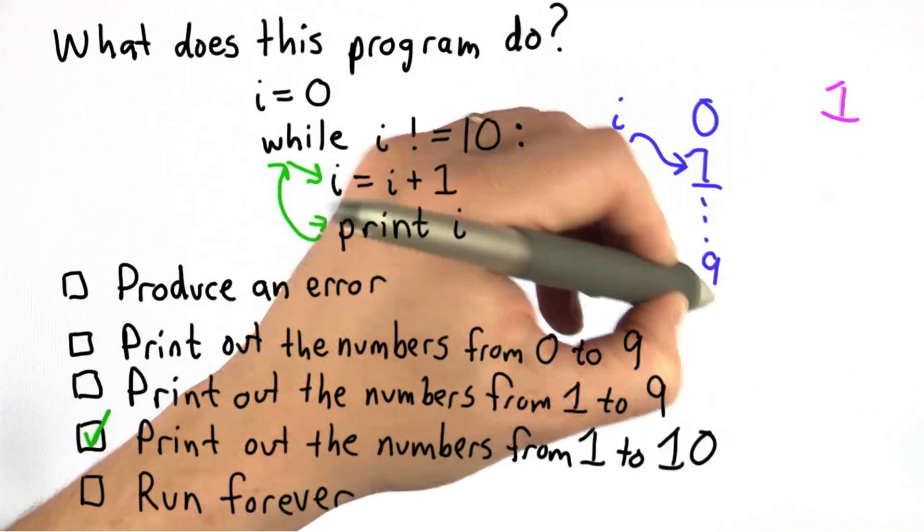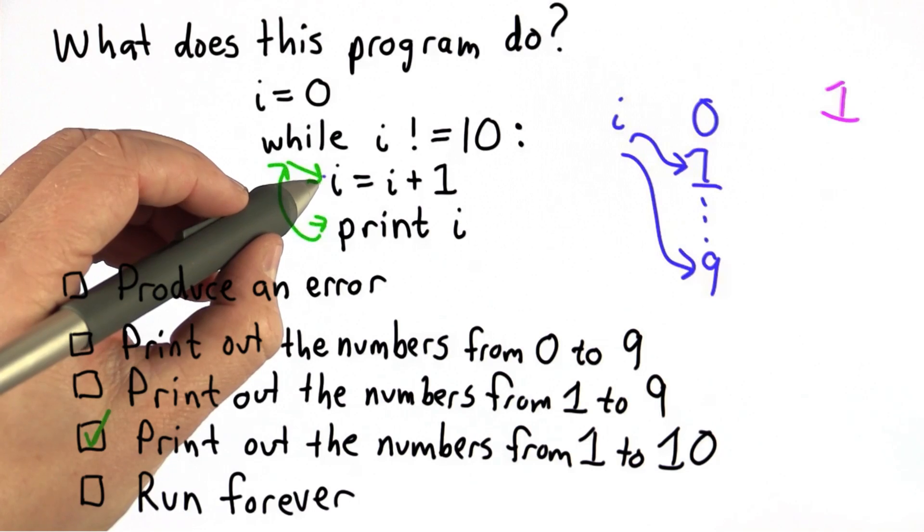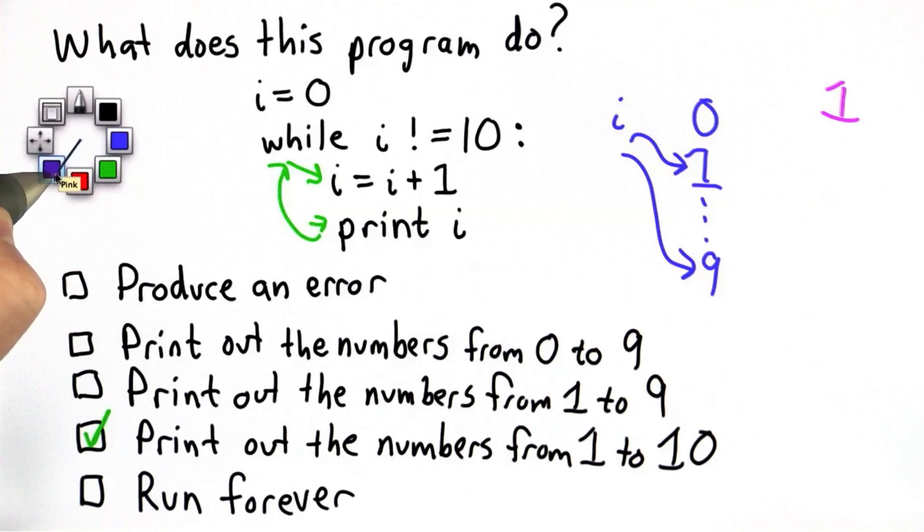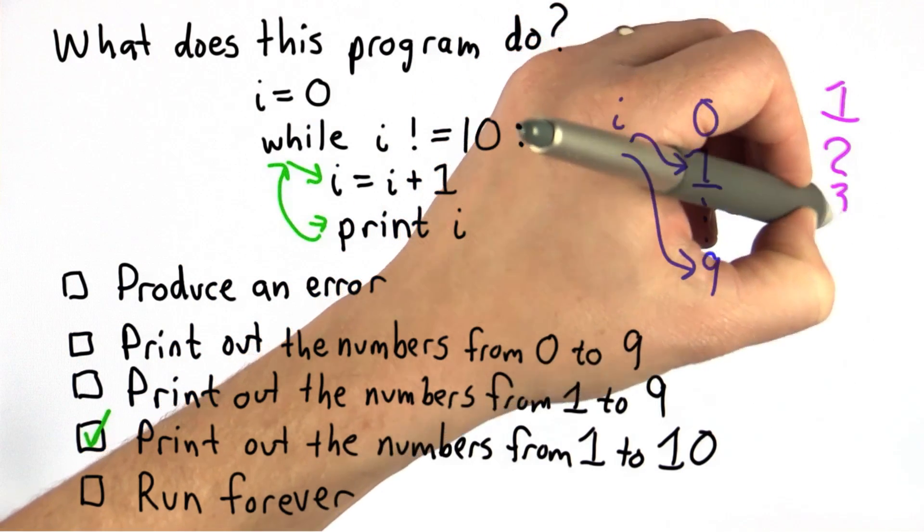Eventually, let's say i is 9. And by the time i is 9, well, after i was 9, we print 9. So we've printed the numbers from 1 through 9.